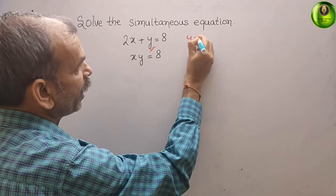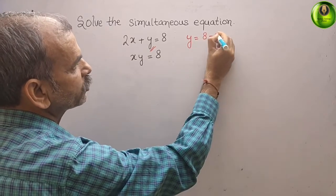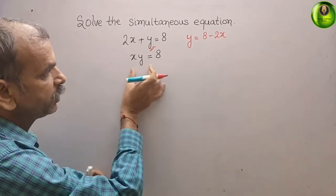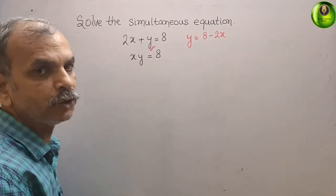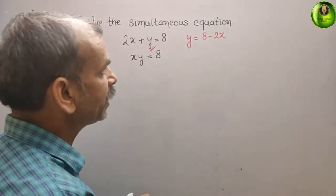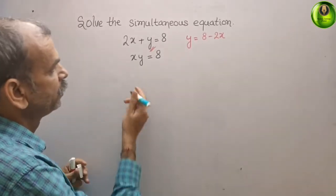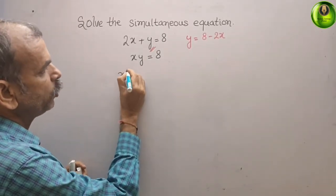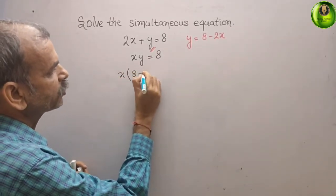What is our y? y is equal to 8 minus 2x. Now solve this, or substitute it. What we will get: we get x into 8 minus 2x.